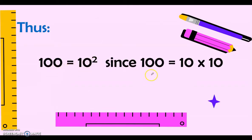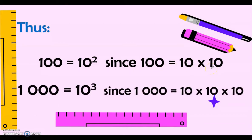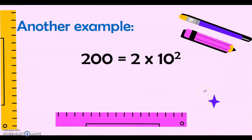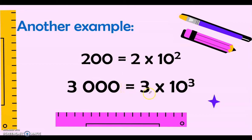Thus, if we have 100, that is equal to 10 to the power of 2, since 100 is equal to 10 times 10. Or we have 1000, which is equal to 10 to the power of 3, since 1000 is equal to 10 times 10 times 10. Another example: 2000 is equal to 2 times 10 to the power of 3, because any whole numbers can be written in exponential form.